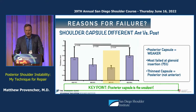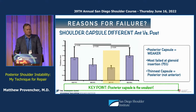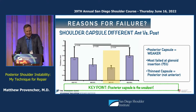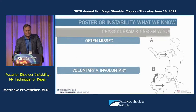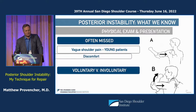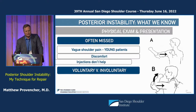The shoulder capsule is much different anteriorly versus posteriorly. We know the anterior capsule is actually two to three millimeters thick, but the posterior capsule is much weaker. That's probably why the muscles and the scapular dynamic stabilizers are so much more important — because the posterior capsule is weaker and the inherent static stabilizers of the shoulder are much different.